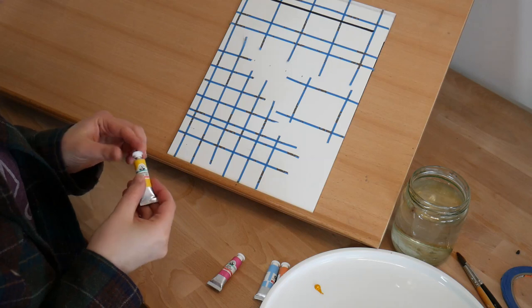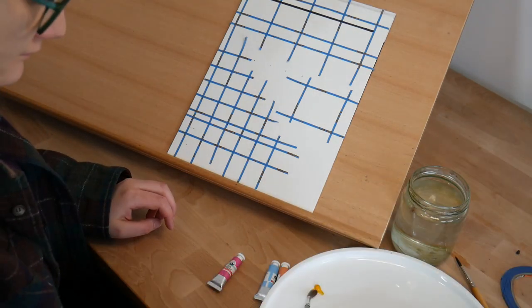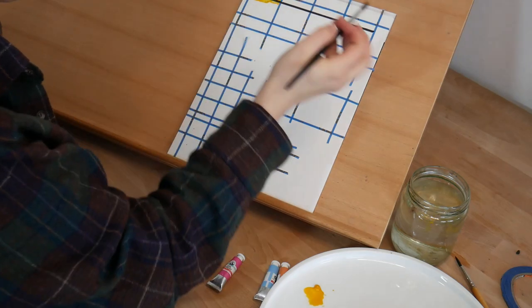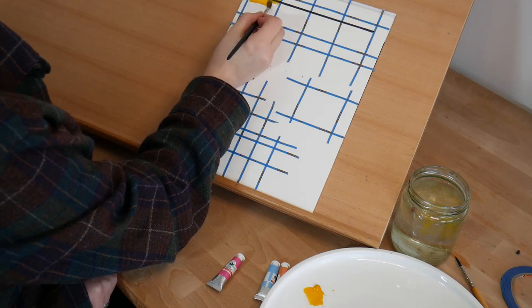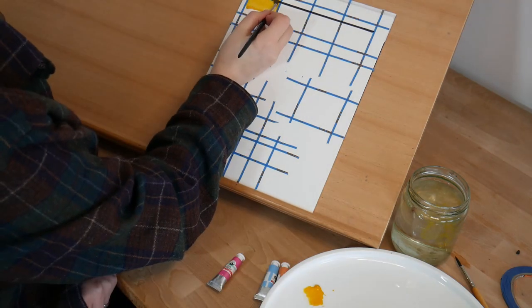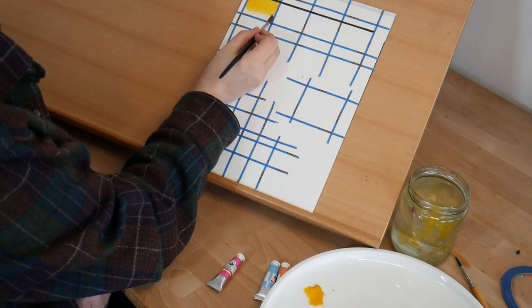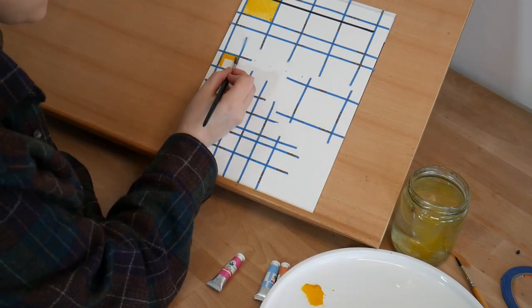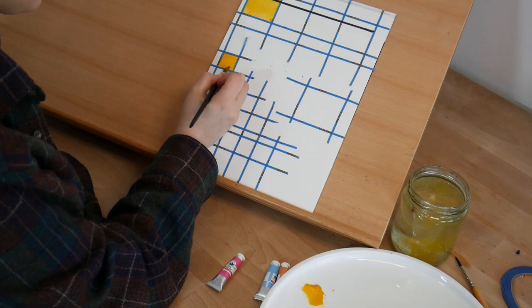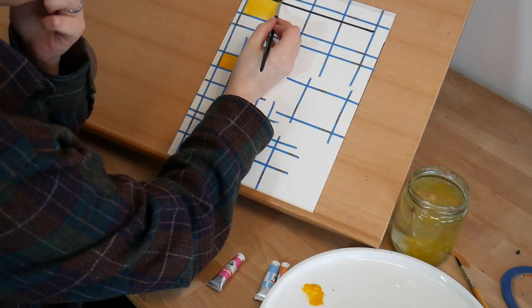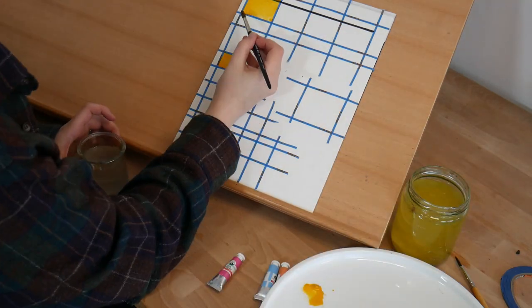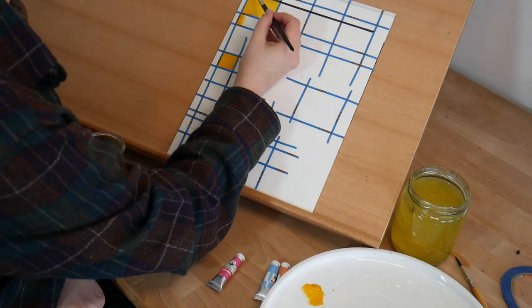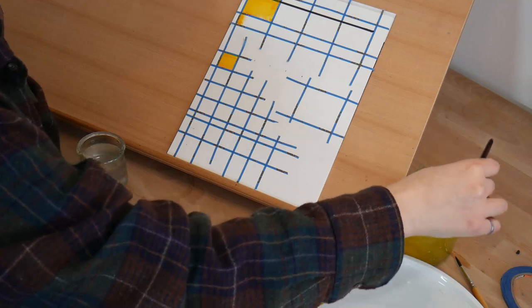So now I'm going to get started with swatching out my colors. Very first we've got PY83 Heveninga Yellow Deep, a sort of Indian yellow type tone, a very warm orangey yellow. It's also quite transparent which I quite like in a yellow, so that's promising. I've been looking for a warm yellow that's transparent ever since PY153 was discontinued, that's Nickel Dioxine or New Gamboge.